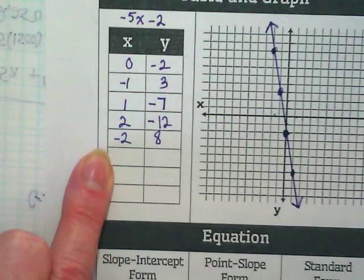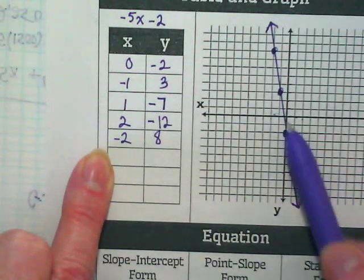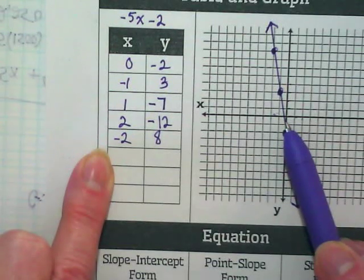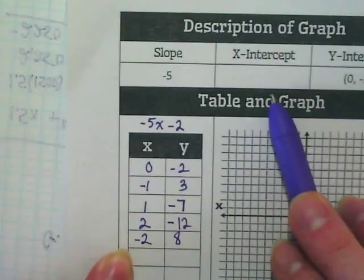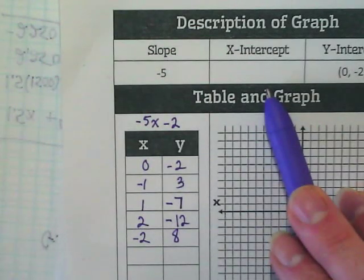Do we have our x-intercept? It's somewhere between 0 and negative 1, isn't it? So I'm going to hold off on that. I can't fill this in yet because it looks like my x-intercept is somewhere in between.